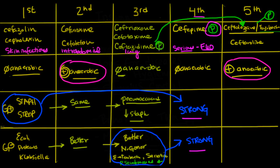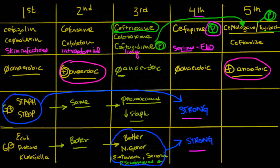To review, there are three cephalosporins with anti-pseudomonal coverage that you should know: ceftazidime, cefepime, and ceftolazane. We use ceftriaxone as our third generation cephalosporin to treat community-acquired pneumonia, but note that ceftriaxone does not have any anti-pseudomonal coverage. So if a patient is coming from a nursing home or institution where they are at risk for pseudomonas, do not use ceftriaxone — only ceftazidime, cefepime, and ceftolazane have anti-pseudomonal coverage.